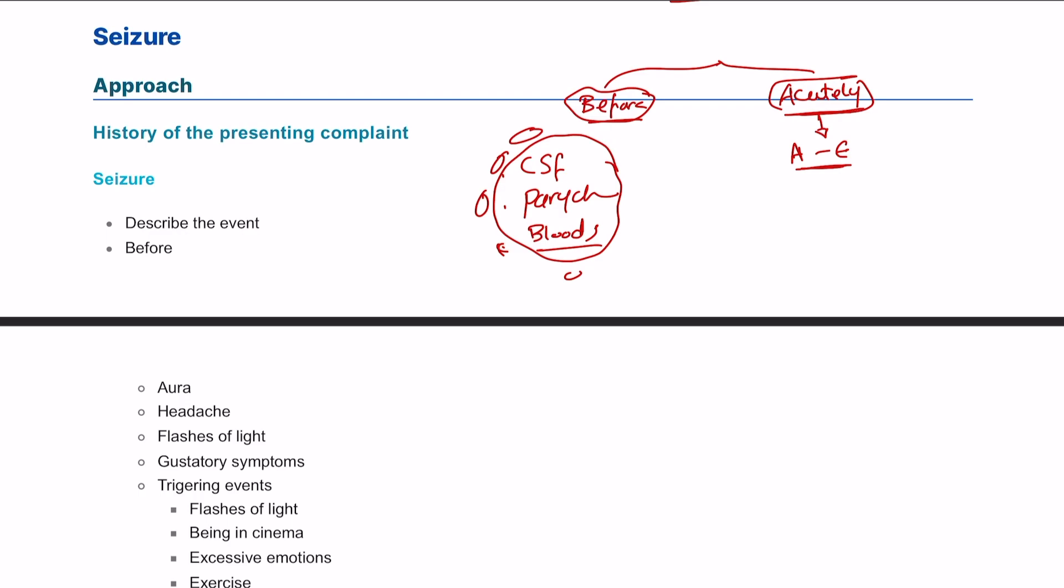So starting by the CSF, if they have a CSF infection, that could lead to seizure. The parenchyma, the space-occupying lesion, whether it's a tumor, primary or secondary, or an abscess, for example, or even infection, any sort of infection. For the blood, you can have a subarachnoid hemorrhage, a subdural hematoma, an epidural hematoma. And obviously, all of these compartments can be disrupted by trauma, like traumatic brain injury.